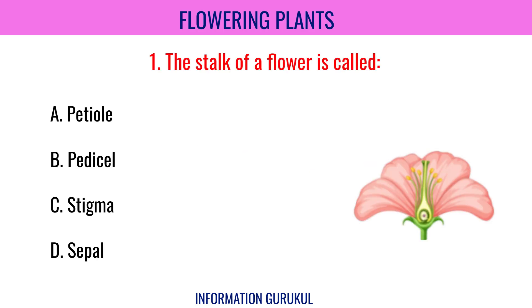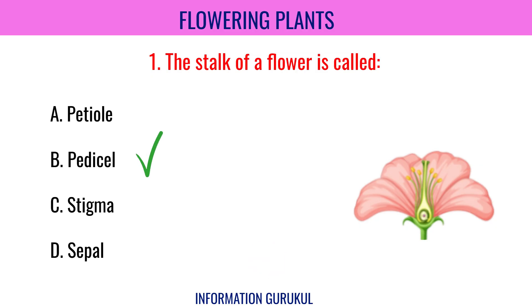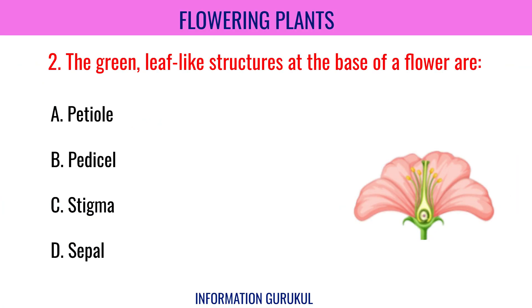The stalk of a flower is called Pedicel. The green, leaf-like structures at the base of a flower are Sepals.